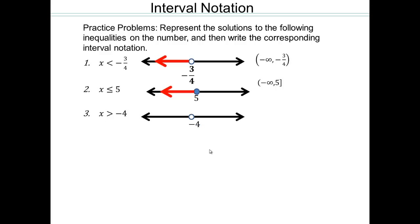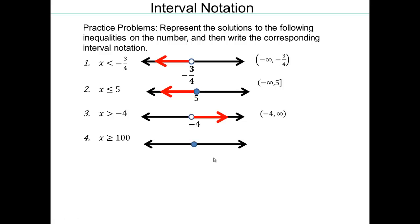For x greater than negative 4: negative 4 is not included, but you go bigger than negative 4. So that would be negative 4 to infinity with round brackets at both negative 4 and infinity. For x greater than or equal to 100: that would be square bracket at 100 to infinity.